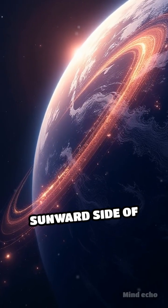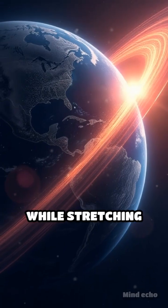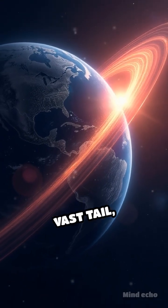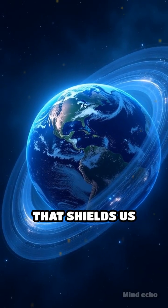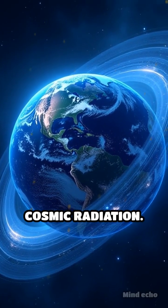The solar wind compresses the sunward side of our magnetosphere while stretching the night side into a vast tail, shaping a protective cocoon that shields us from deadly cosmic radiation.